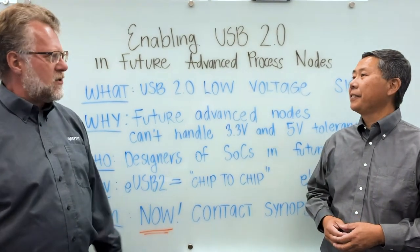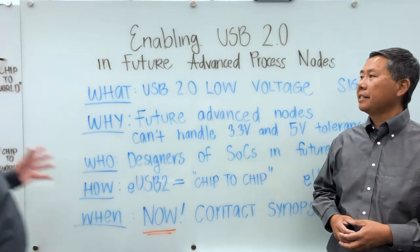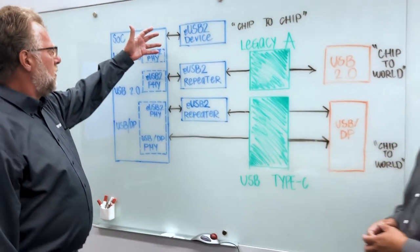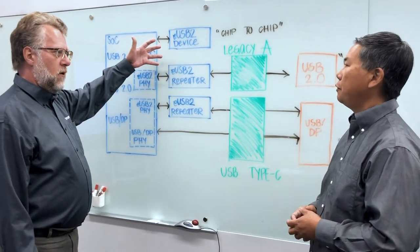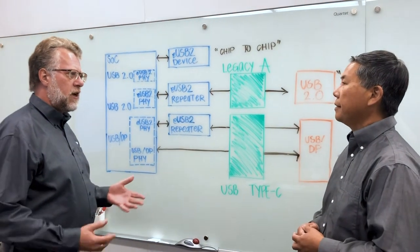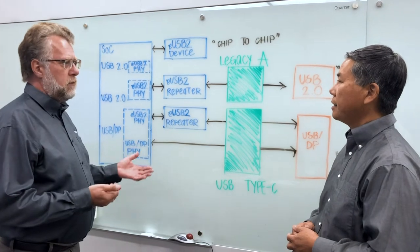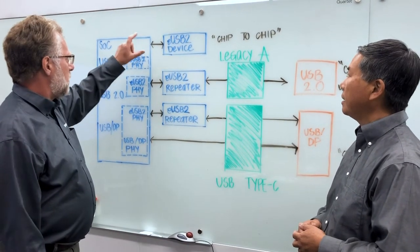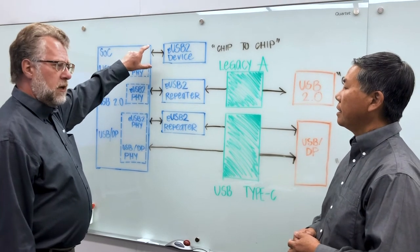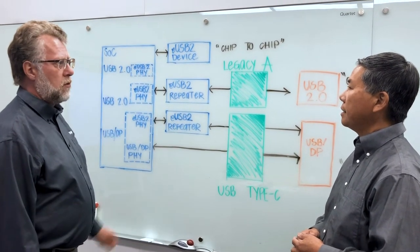Well, as we just said, backwards compatibility is very important, but if you have a look at this block diagram, you can also use embedded USB for embedded devices. For example, like a trackpad, webcam, Bluetooth, or other peripherals that don't need to be connected via cable. And eUSB 2 is a much lower power solution.